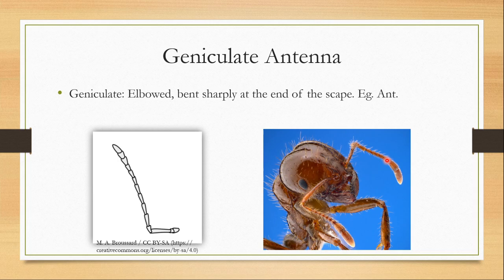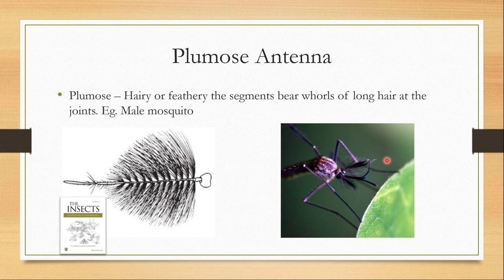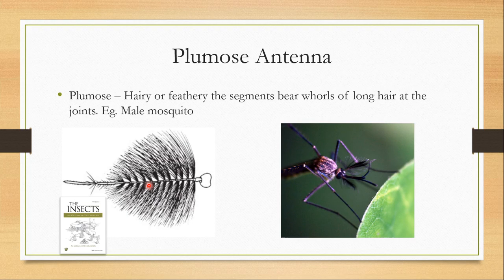Next I am going to talk about the plumose antennae. The plumose or hairy or feathery antennae are found in male mosquitoes. Here the segments bear whorls of long hair at the joints, giving a very hairy structure. The female antennae in mosquitoes is not as hairy or feathery — in female mosquitoes it is usually known as pilose antennae, while the male type is known as the plumose type.